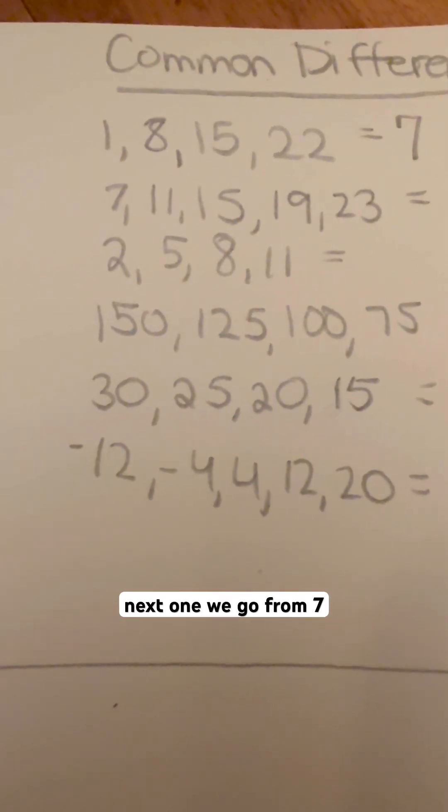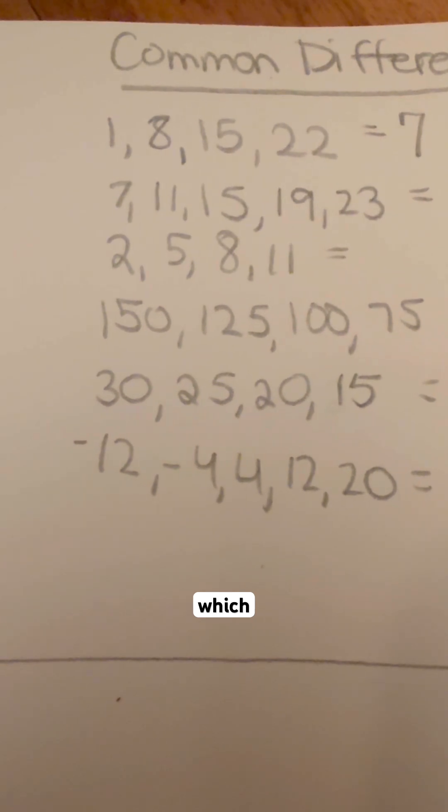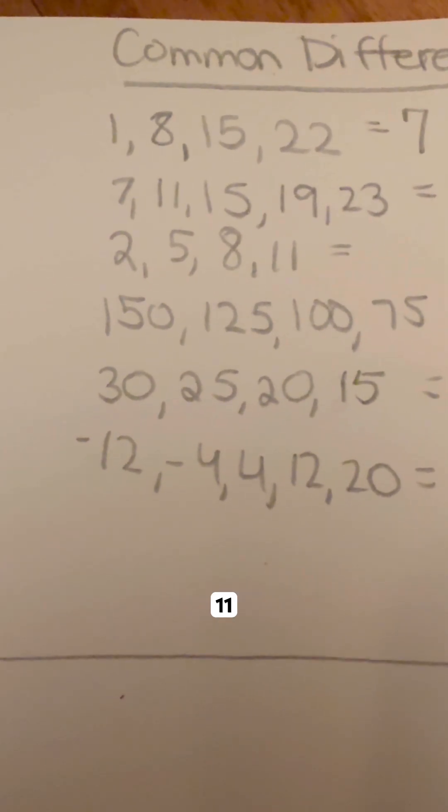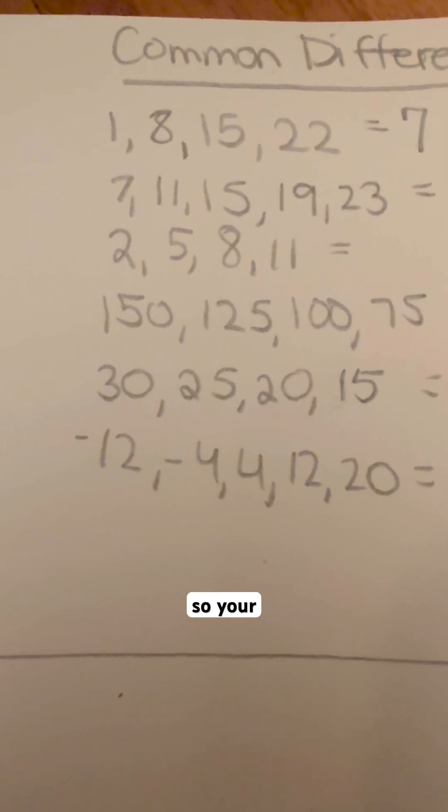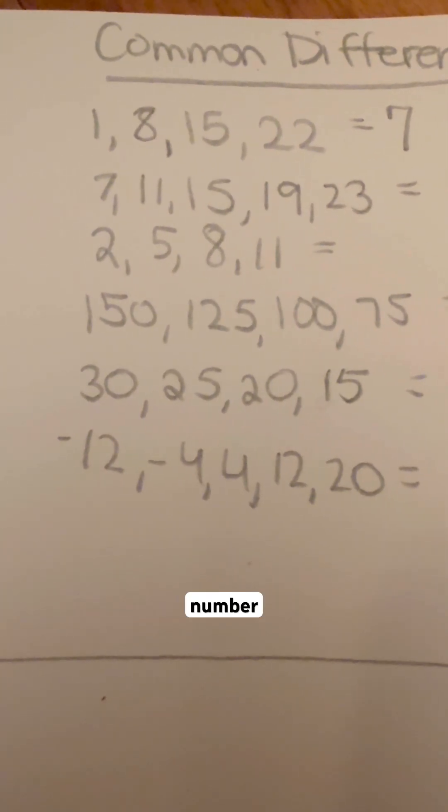And then the next one, we go from 7 up to 11, which again, if you're not sure, 11 minus 7 is 4. So your common difference should be adding 4 to every single number.